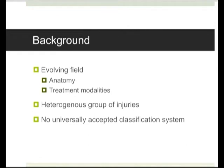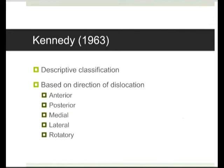The real-life classification system that most people use is based purely on what we think is actually injured. So when you ring your boss you say there's a patient with a knee dislocation with this, or there's a patient with a multiligament injured knee which has an ACL, PCL, and posterolateral corner. I don't think that that's really a formalised classification system that has anyone's name on it.